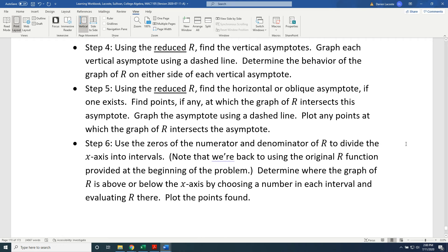Step 6: Use the zeros of the numerator and denominator of R to divide the x-axis into intervals. Note that we're back to using the original R function provided at the beginning of the problem. Determine where the graph of R is above or below the x-axis by choosing a number in each interval and evaluating R there. Plot the points found.